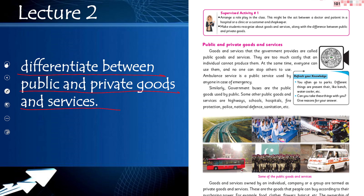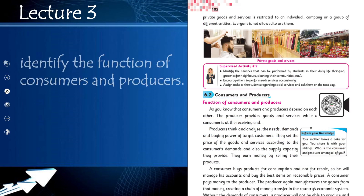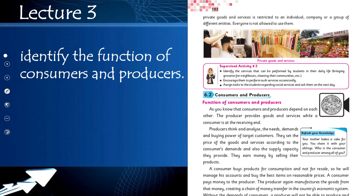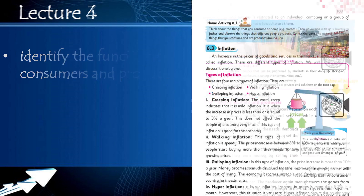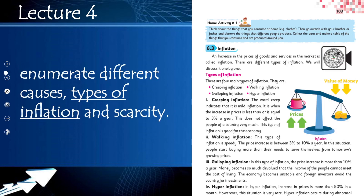In lecture number three, students will be able to identify the function of consumers and producers. Students will separately discuss what the function of a consumer and a producer is. In lecture number four, the students will be able to enumerate the different causes and types of inflation and scarcity.